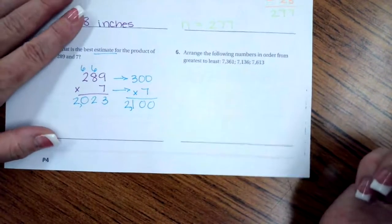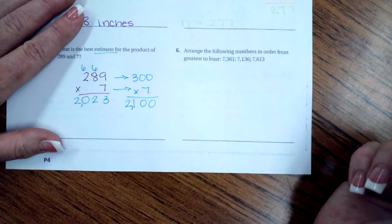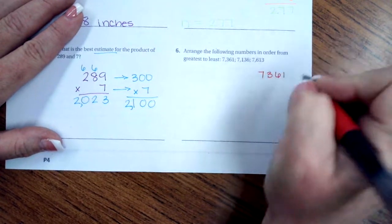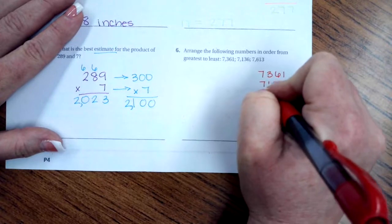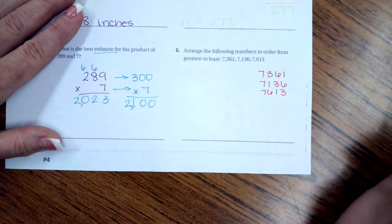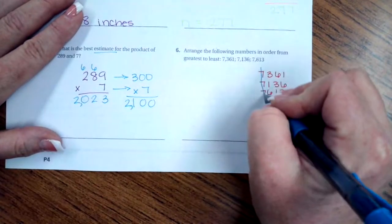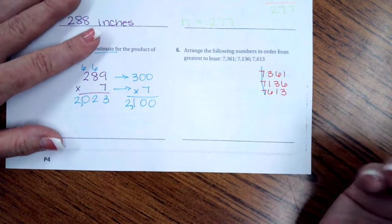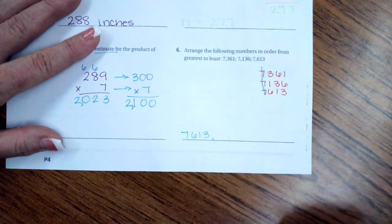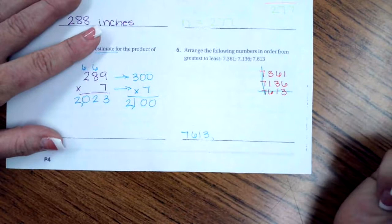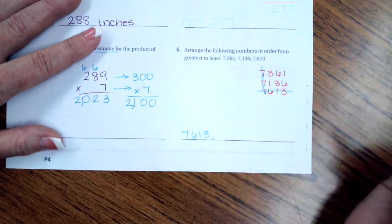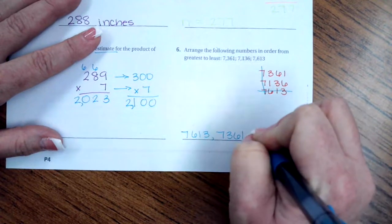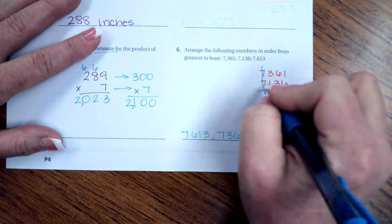Number 6. Arrange the following numbers in order from greatest to least. So, biggest to smallest. So, what I'm going to do is I'm going to come over and I'm going to write them one above the other so that I can tell which one is first. So, we can all see that all the 7's are the same. Now, I have a 3, a 1, and a 6. I need biggest to smallest. So, 6 is going to be my first one. So, I have 7, 6, 1, 3. I'm going to cross that one off because I don't need it anymore. Now, I have a 3 and a 1. So, the 3 is going to be bigger than the 1. So, I'm going to have 7, 3, 6, 1. And then my last one, 7, 1, 3, 6. Cross those guys off.